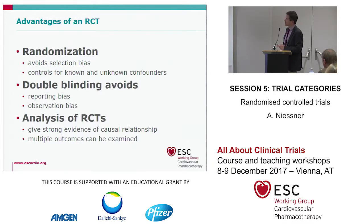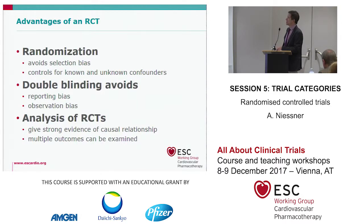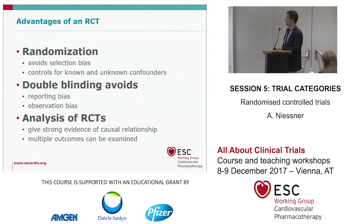To summarize the advantages of randomized controlled trials: randomization avoids selection bias and controls for known and unknown confounders — it's the only study design that controls for unknown confounders. Double blinding avoids reporting bias and observation bias, helping handle the two main enemies: bias and confounding. Analysis gives strong evidence of causal relationships, and multiple outcomes can be examined.